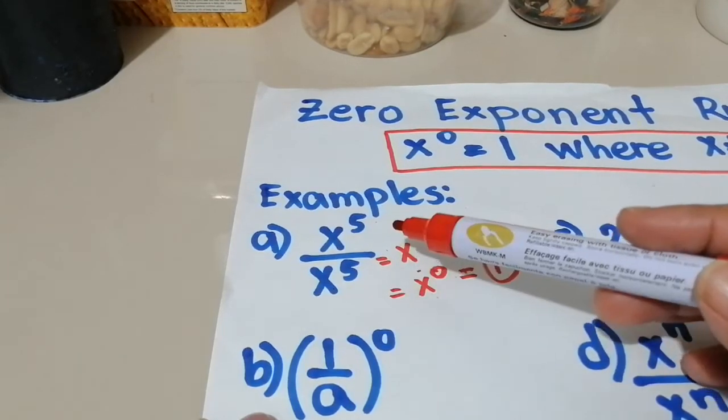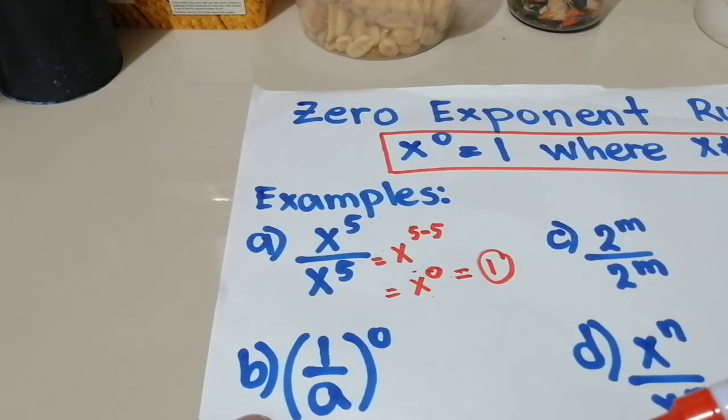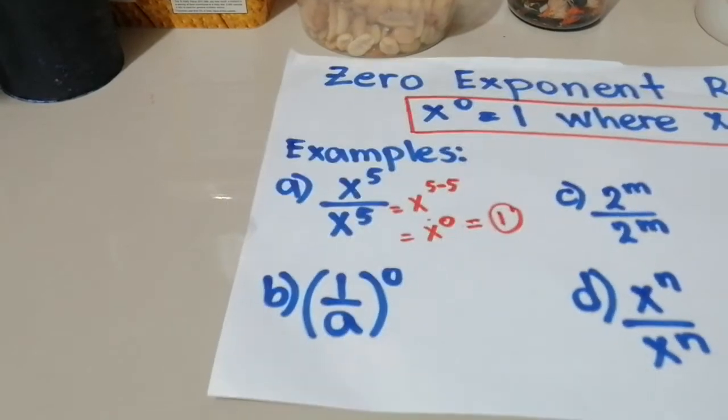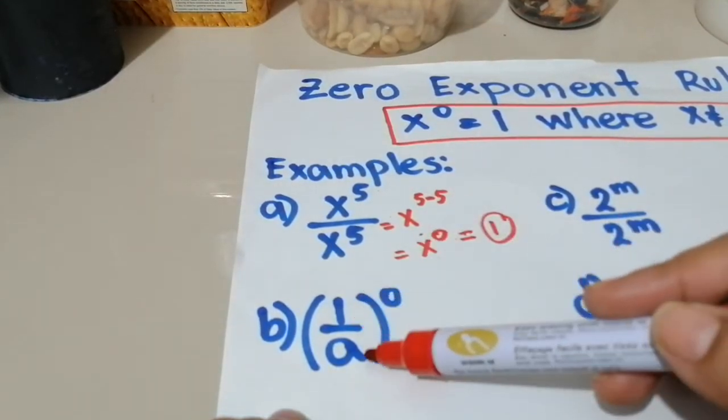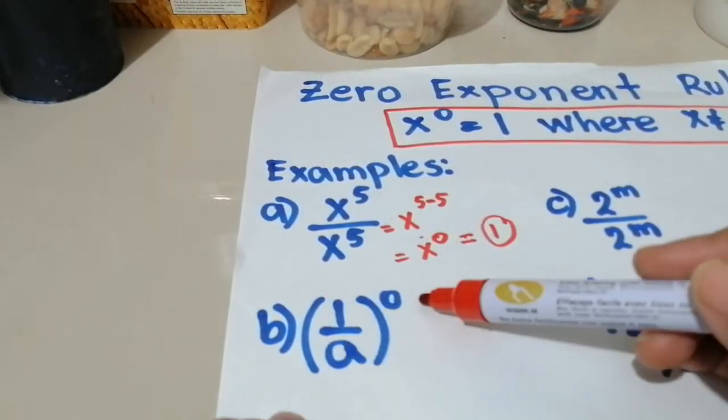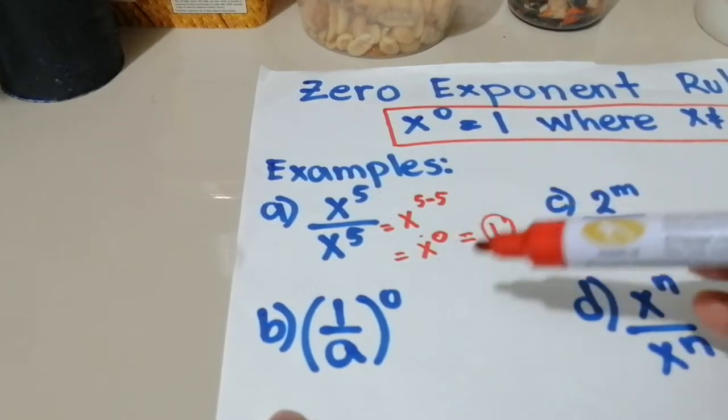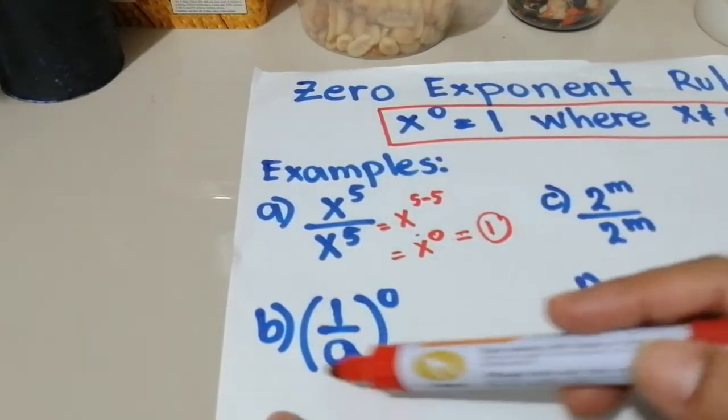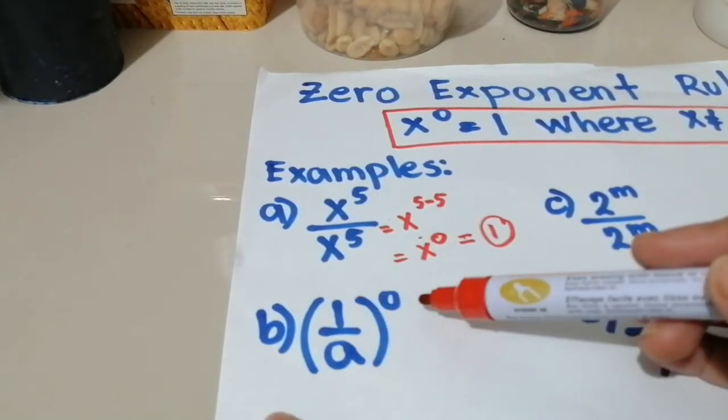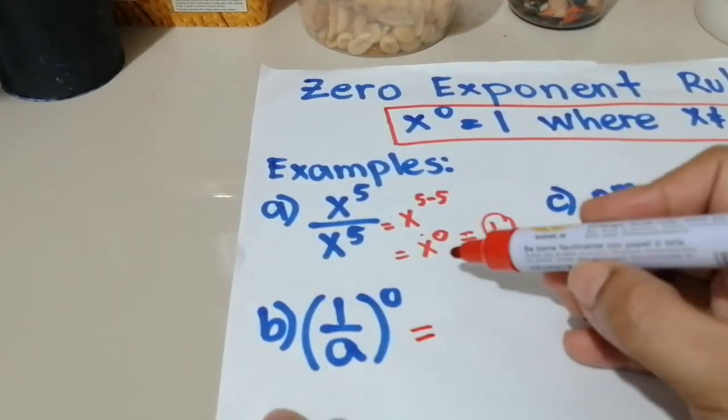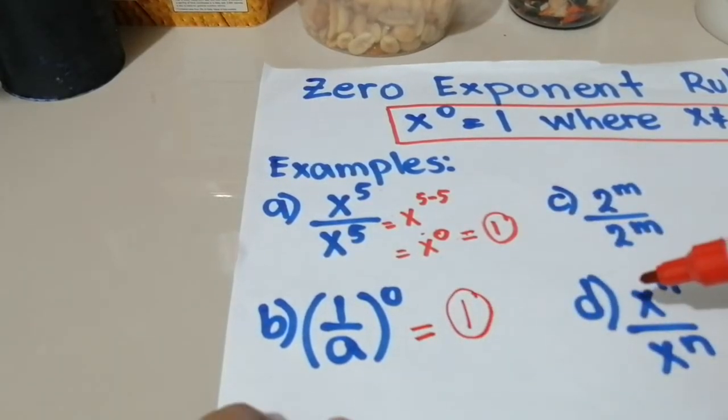So that's the rule. Una-una, simplify, and then after, if the exponent is 0, then it's always equal to 1. Next, what if we have this kind of example? 1 over a, close and open parenthesis, exponent 0. So dito, we don't need to simplify anything. Since this expression here has an exponent of 0, anong mangyayari? Equal to 1 kaagad yan. So the final answer here is 1.